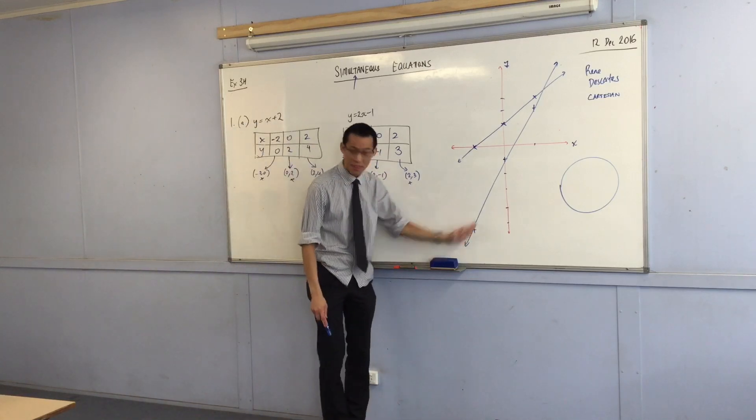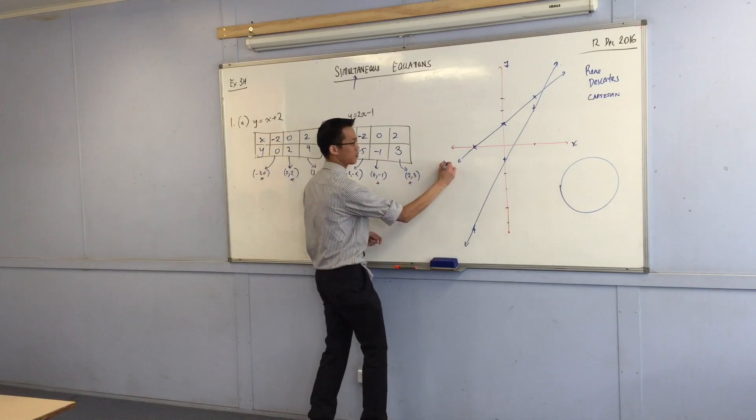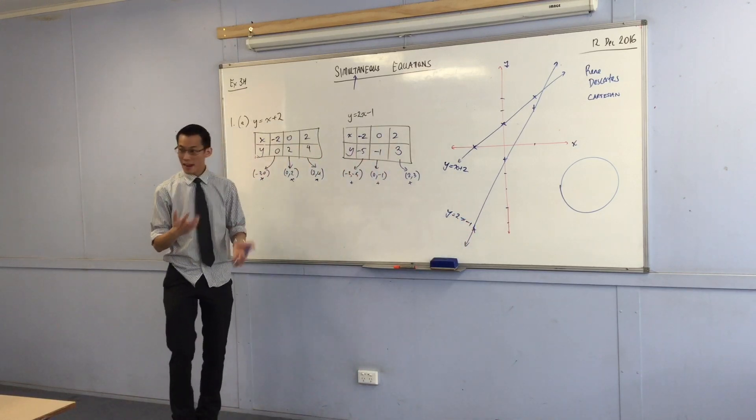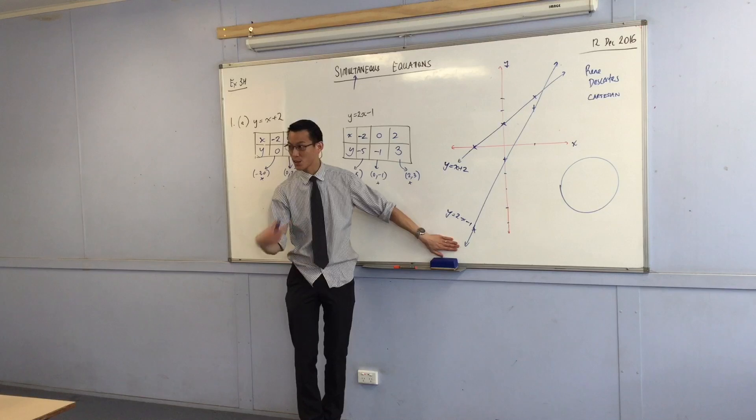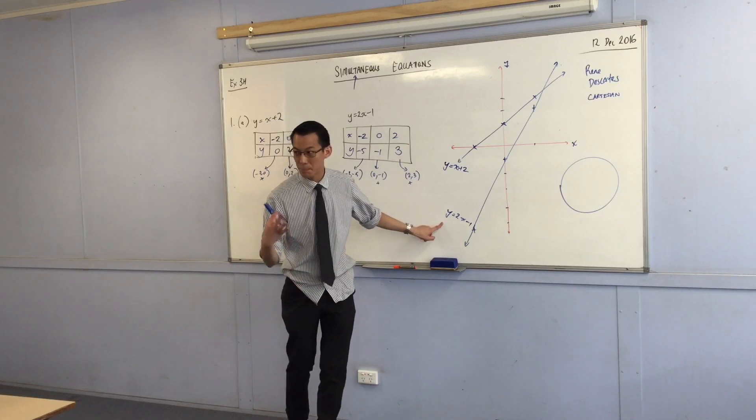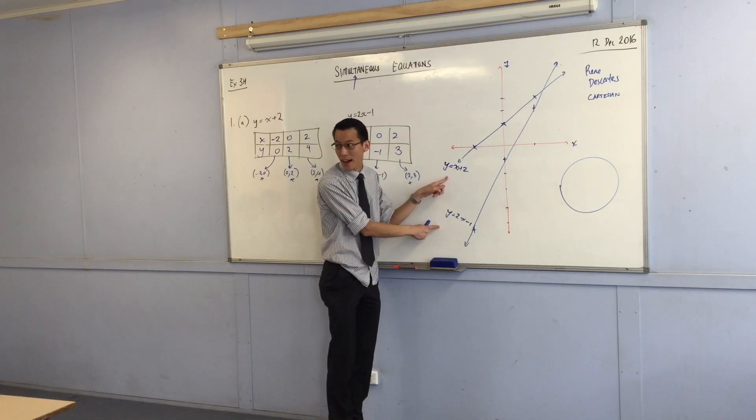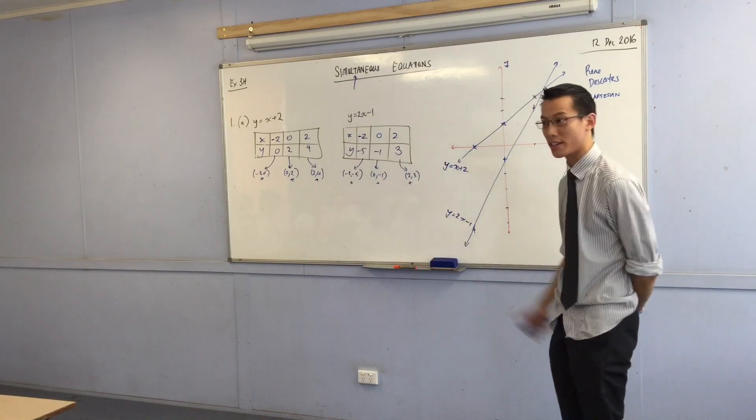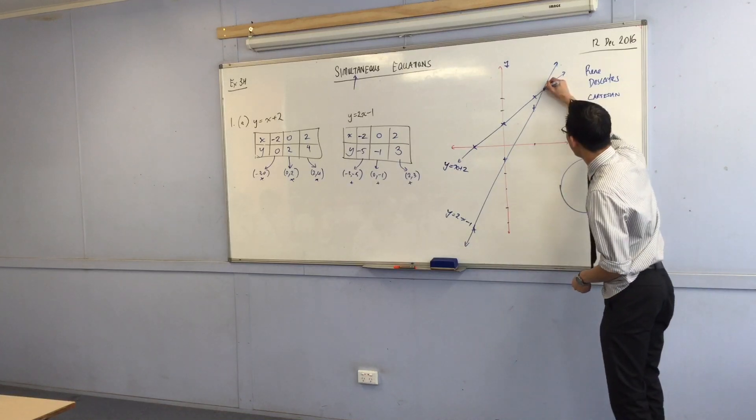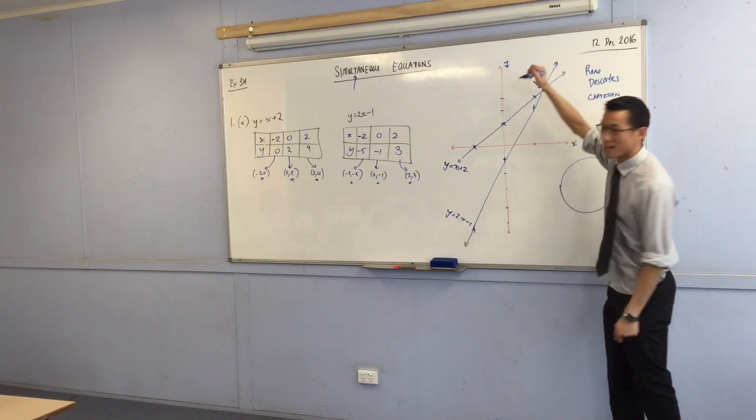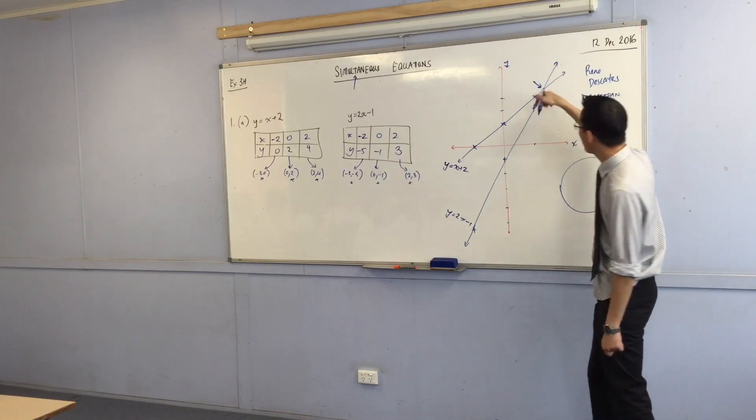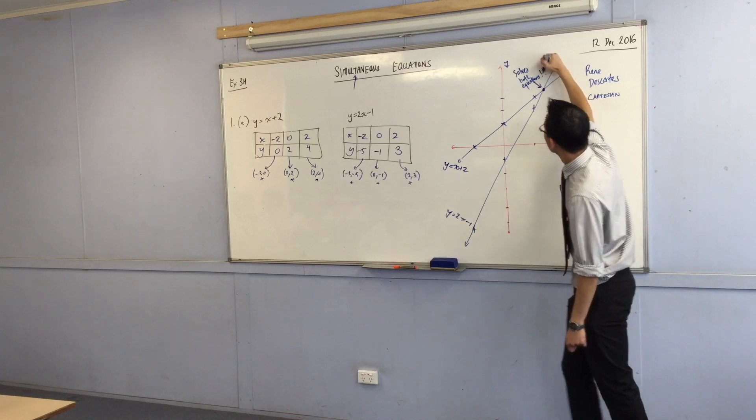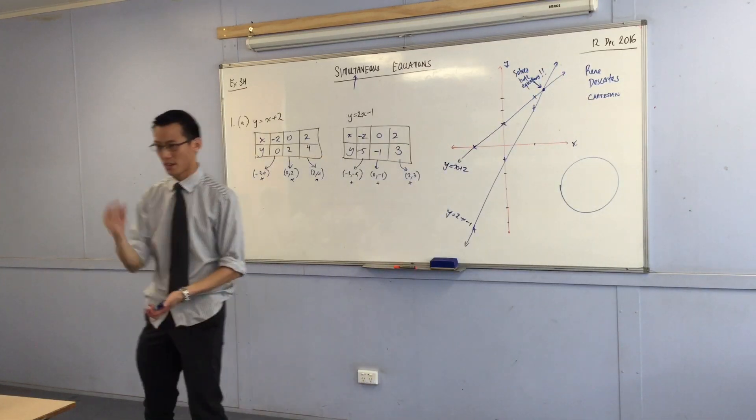So every point on this line is a solution to him. In the same way, every point on this line, and by the way, why don't you label them with me? This is y equals x plus 2, and this is y equals 2x minus 1. Every point on this line is a solution to this equation. So remember, I wanted a point that solves both of them at the same time. I need a point that's on both lines at the same time. And there's only one. Can you see it? It's this guy. Right here. So I want you to label this. And I want you to say, this guy here solves both equations. In other words, he solves the equations simultaneously.